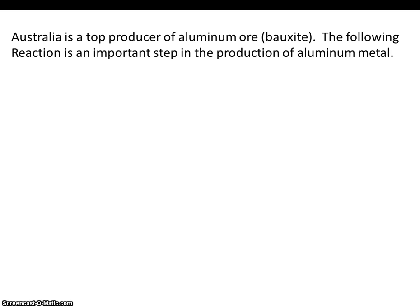In this stoichiometry problem, we'll be completing a mole to mole conversion. Australia is the top producer of aluminum ore. Another name for that type of ore is bauxite. The following reaction is an important step in the production of aluminum metal.